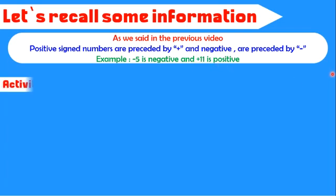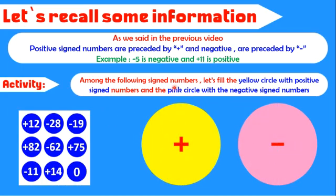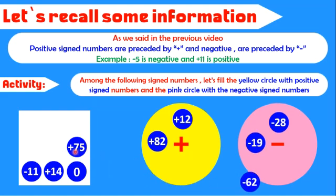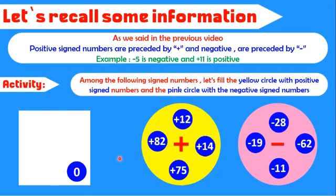Let's do an activity. Among the following signed numbers, let's fill the yellow circle with positive signed numbers and the pink circle with negative signed numbers. Notice here, plus 12 is preceded by plus, so it must be in the yellow circle. Minus 28 is preceded by negative sign, so it must be in the pink circle. Minus 19 is negative, plus 82 positive, minus 62 is negative, plus 75 positive, minus 11 is negative, and plus 14 is positive.